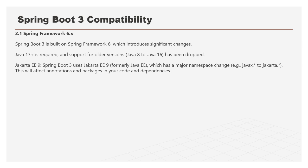Now regarding Spring Boot 3 compatibility: the core Spring Framework has been upgraded to 6.x, so Spring Boot 3 is built on top of Spring Framework 6. Everything including beans, life cycles, and other core things must be upgraded to that framework. Java 17 is required, and support for older versions like Java 8 through 16 has been dropped.